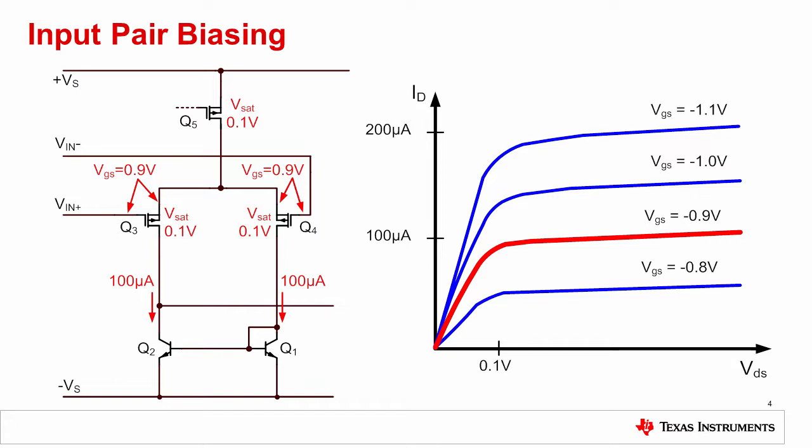The diagram on the left shows a simplified schematic of the input stage in a typical CMOS op amp. In normal operation, the bias current in each input transistor is balanced, at 100 microamps in this example.